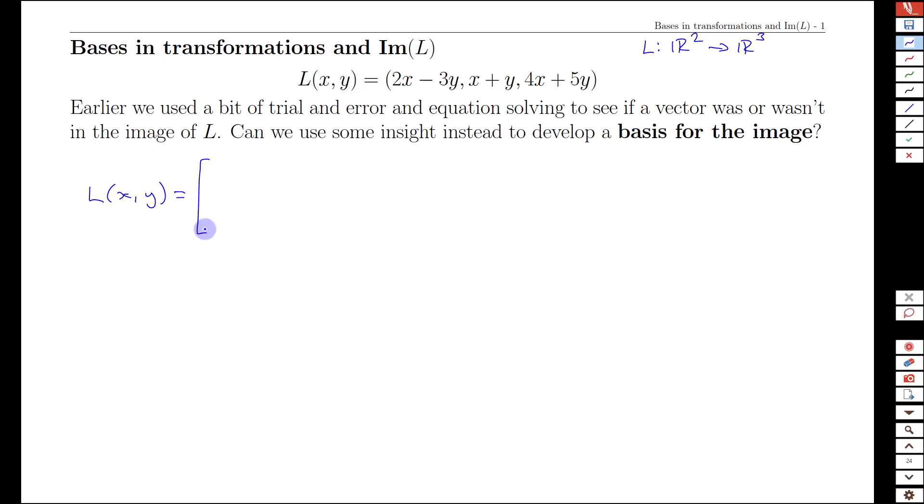We'll write this using vector notation in a column for a different visualization. Here we have 2x - 3y, x + y, and 4x + 5y as the three components. The image is about the outputs. This becomes interesting when we extract the x coefficients—2, 1, and 4—and separately the y coefficients—negative 3, 1, and 5.